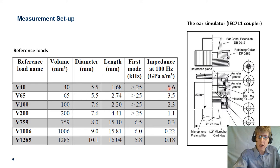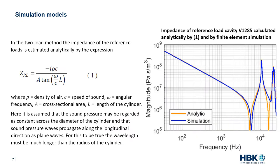As an example of a more complex load, we have the IC7-11 coupler, with a measurement microphone, a 12.5 millimeter ear canal extension, and narrow slits leading to two annular cavities.